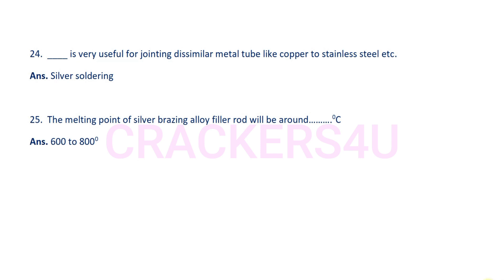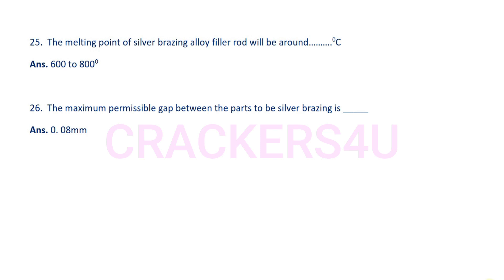Question 25: The melting point of silver brazing alloy filler rod will be around dash degrees Celsius. Answer: 600 to 800 degrees Celsius. Question 26: The maximum permissible gap between the parts to be silver brazed is dash. Answer: 0.08 mm.